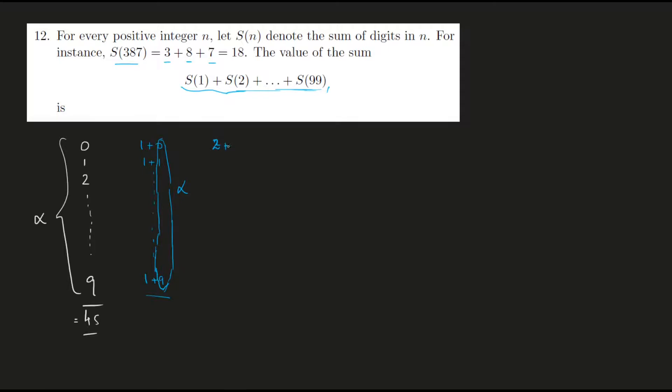What about S of 20? S of 20 would be 2 plus 0, then 21 would be 2 plus 1, and again till 29, so you have another alpha here. And so on up till the last one: S of 90 would be 9 plus 0, 9 plus 1, and so on till S of 99.